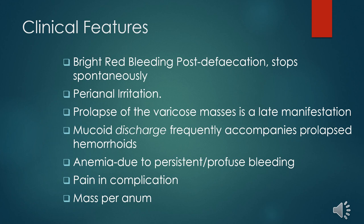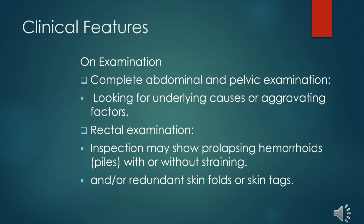Bleeding can also lead to perianal irritation. If the hemorrhoids are prolapsed, there will be visible masses felt around the perianal area. This can also lead to a patient presenting with mucoid discharge. If the bleeding persists or becomes profuse, the patient may be pale or present with anemia. When hemorrhoids complicate, they may present with pain. If prolapsed hemorrhoids are not dealt with, they become bigger and present as a mass per anum.